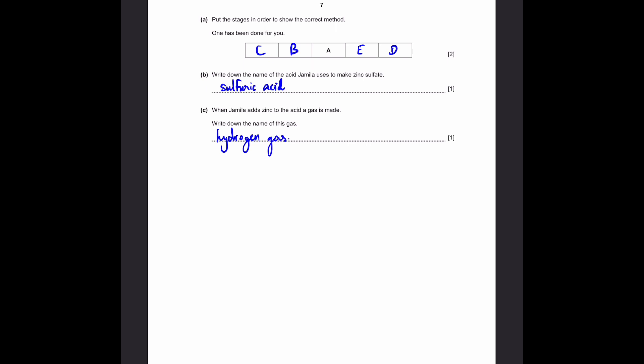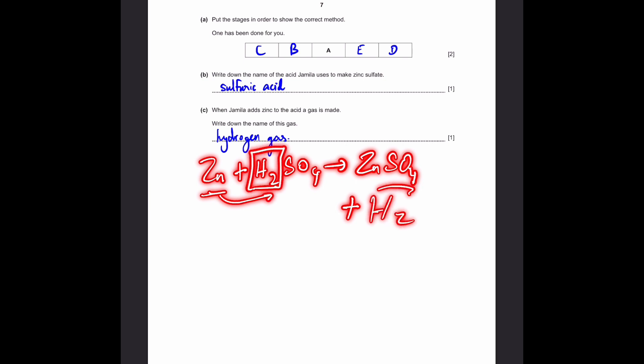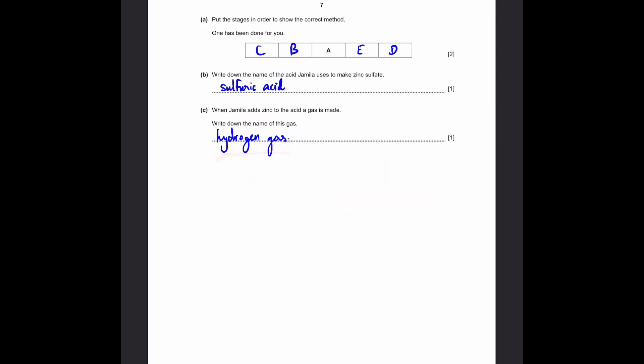We need to understand the chemical reaction to do this. So, zinc, Zn, plus sulfuric acid, H2SO4, gives ZnSO4, which is zinc sulfate, plus what is left. The zinc has replaced the hydrogen here. So, the hydrogen gas is left. And noticing this, you'll be able to find that the gas is simply hydrogen gas. That's the answer.